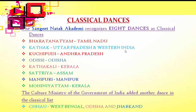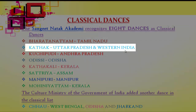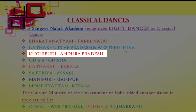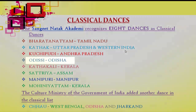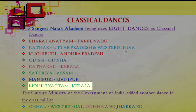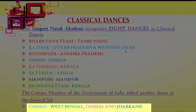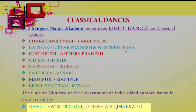The major Indian classical dances are 8 in number. The Sangeet Natak Academy recognizes 8 dances as classical dances: Bharatnatyam from Tamil Nadu, Kathak from Uttar Pradesh and Western India, Kuchipudi from Andhra Pradesh, Odissi from Odisha, Kathakali from Kerala, Satriya from Assam, Manipuri from Manipur, and Mohiniattam from Kerala. The Cultural Ministry of the Government of India has added another dance — Chau — which belongs to three states: West Bengal, Odisha and Jharkhand.